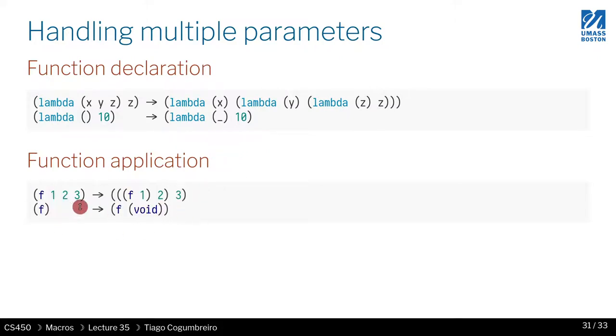And finally, when you have function application, you have to do the reverse, which means F of one, two, three should be F of one nested inside function call for two, nested inside function call for three. And also with empty, a special case for a function with zero parameters where you should just call it with passing void. So this would be D colon void.